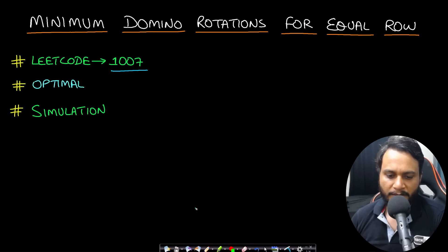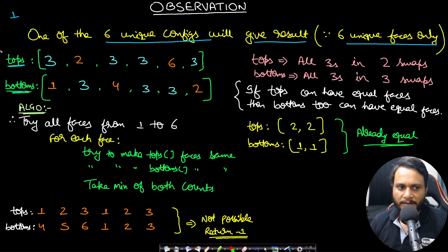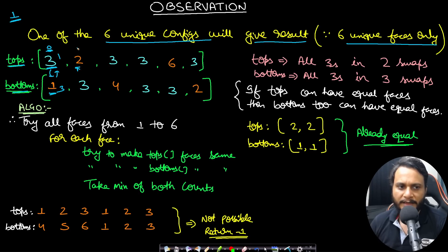Key observation: since there are only six unique face values, one of the six configurations will always give the result. We try to make all top faces equal to one: at index zero, if tops[i] equals one we skip it; if not, we check bottoms[i] — if that equals one, we perform the swap and increment the swap count. Moving to index one, we check if the value is one — it's not, and bottoms[1] is also not one.